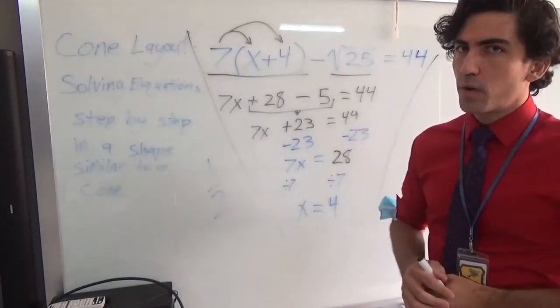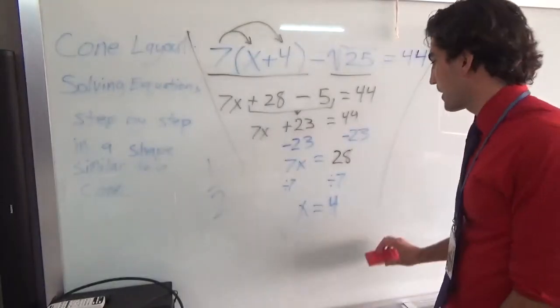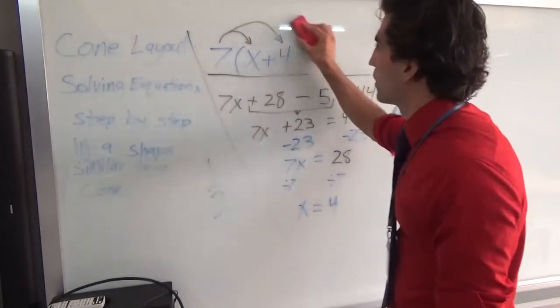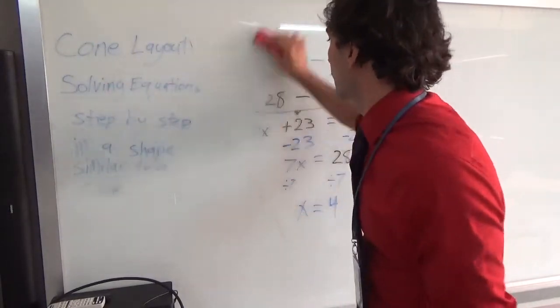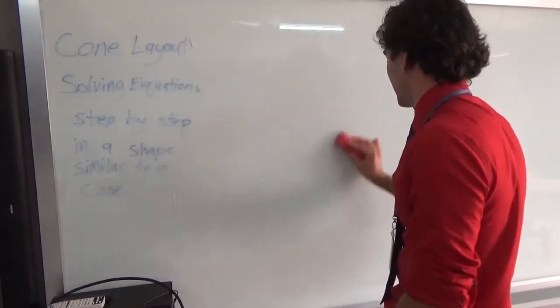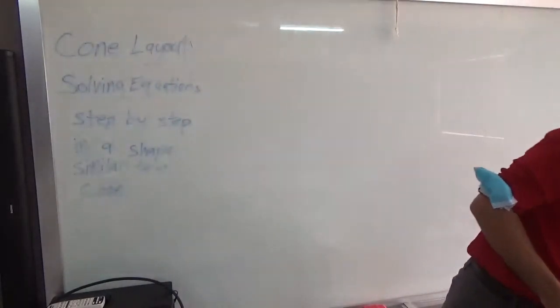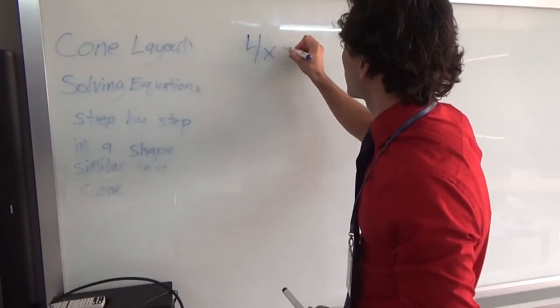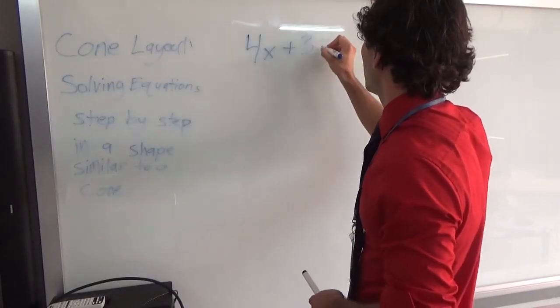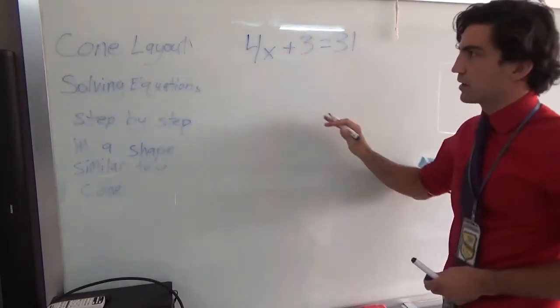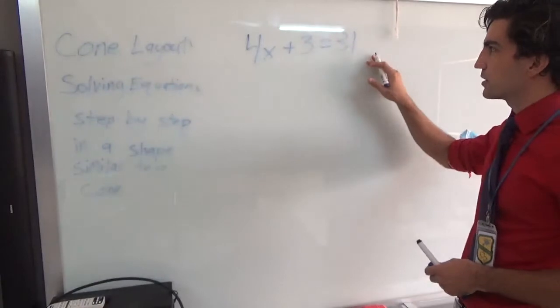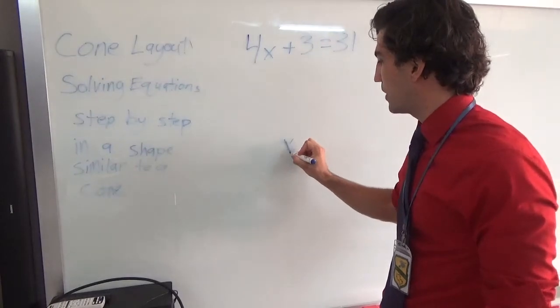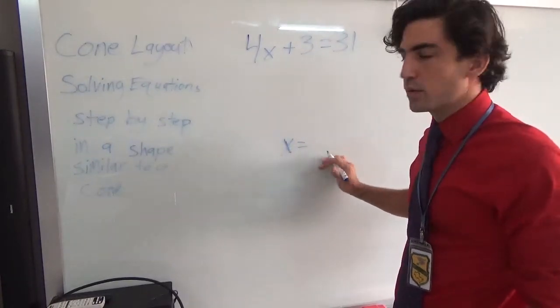Let me go through one more example. It'll be a little bit smaller than this. And it'll hopefully give you the idea of what we're going for, what I'm looking for. We want 4x plus 3 equals 31. Okay, if I'm given 4x plus 3 equals 31, again, my goal is to get x all by itself and equal to a number.